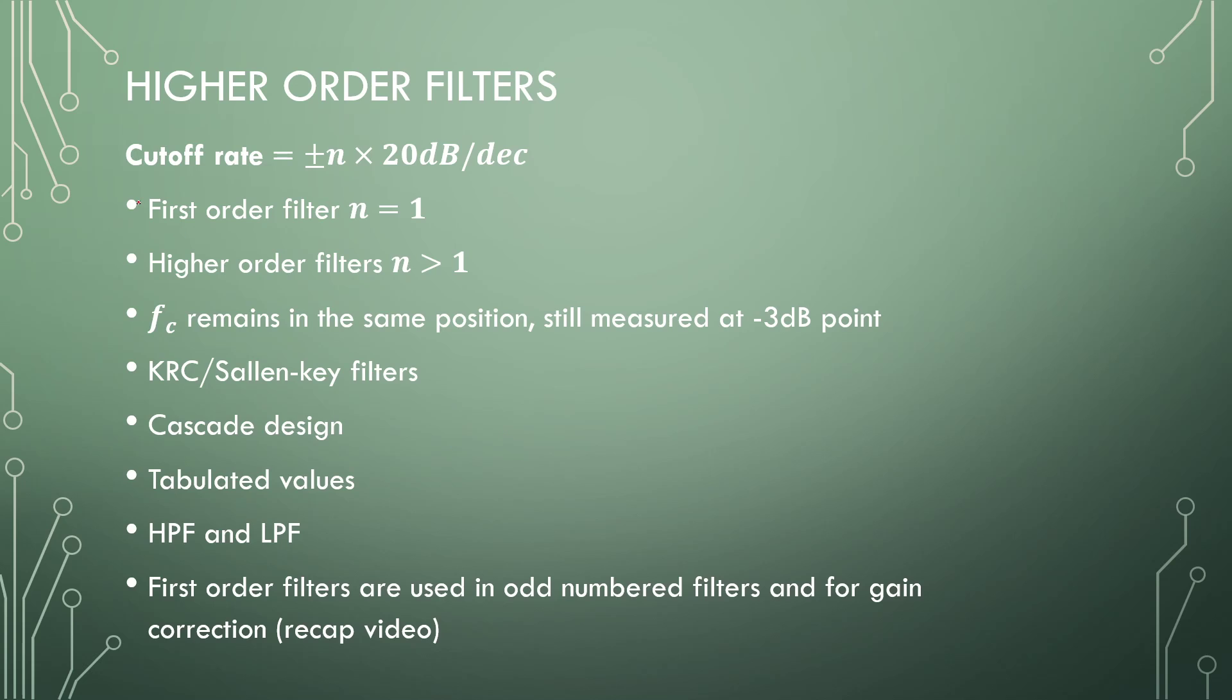The cutoff rate of the filter for higher than second order is plus-minus the order multiplied by 20 decibels per decade. The plus-minus is whether it's low pass or high pass. So first order filter cuts off at 20 decibels per decade, a second order at 40, a third at 60, and so on and so forth. For a first order filter, N is 1. Higher order filters, N is larger than 1.